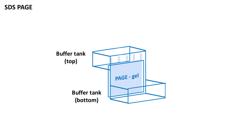The electrophoresis unit of SDS-PAGE has two tanks for the buffer. The glass plates with polymerized gel are placed vertically such that the top and the bottom of the gel remain in contact with the buffer.